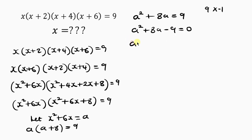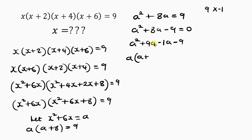We replace the middle term 8a with our factors. So we write a²+9a−1a−9 = 0. From the first two terms, a is common: a(a+9). From the last two terms, 1 is common: −1(a+9). So we have (a+9)(a−1) = 0.